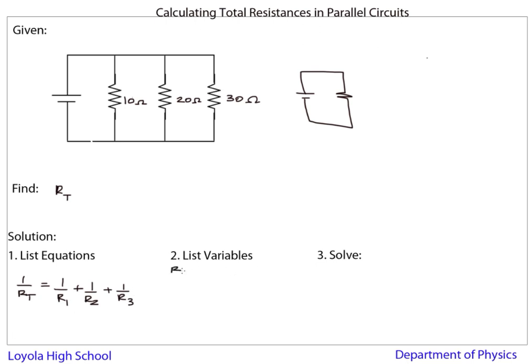In the variables part, we have R total, which we do not know. We're trying to find that out. We have R1, which is 10 ohms. We have R2, which is 20 ohms. And R3, which is 30 ohms.